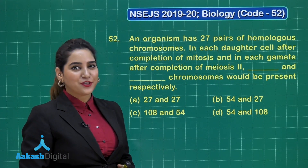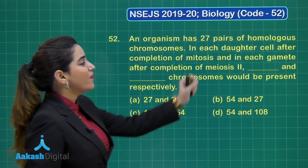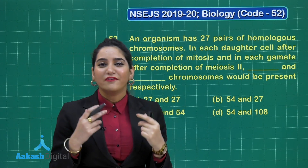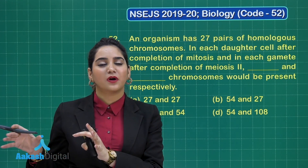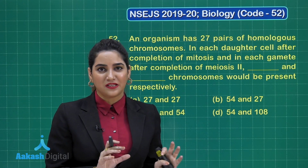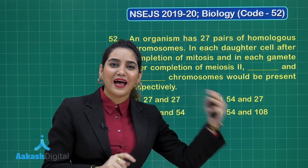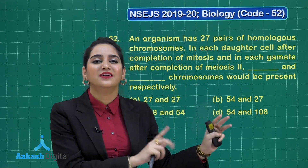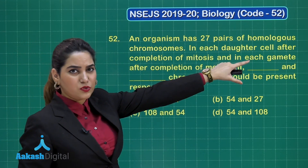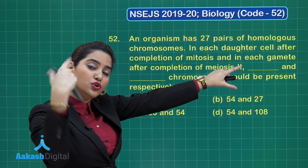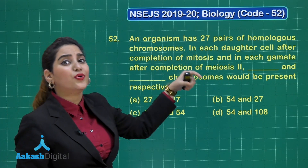Question number 52: an organism has 27 pairs of homologous chromosomes. We need to know what a homologous chromosome is. We have two sets of chromosomes — half from the maternal side and half from the paternal side. So we have two copies of chromosome 1, two copies of chromosome 2, and so on. We ourselves have 23 pairs, but here in the question we are given 27 pairs.